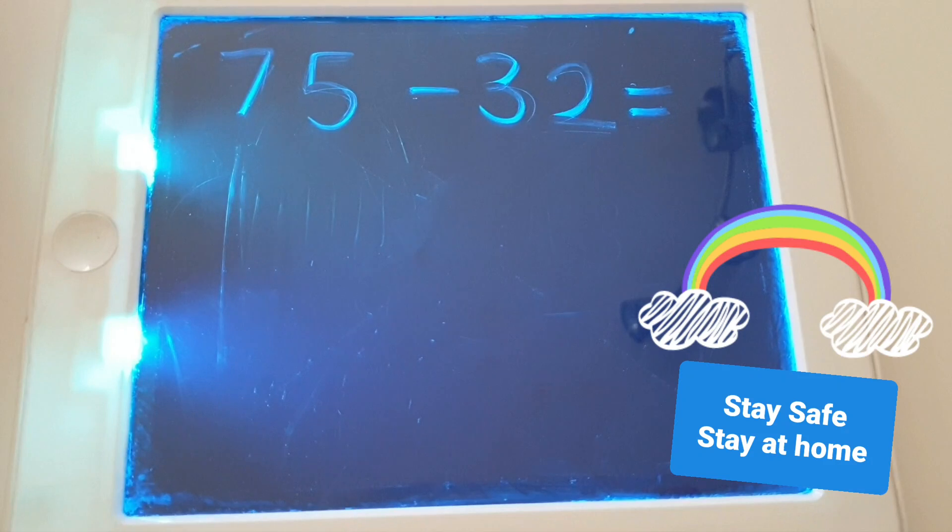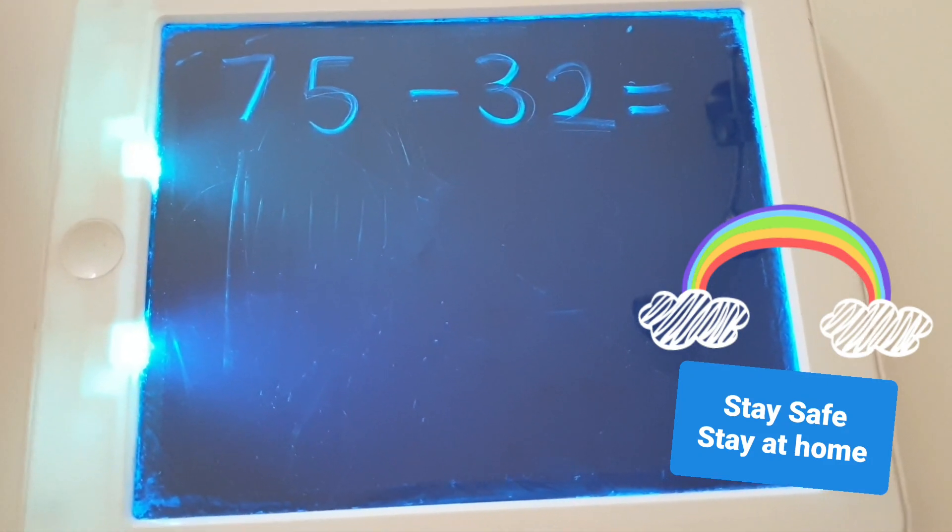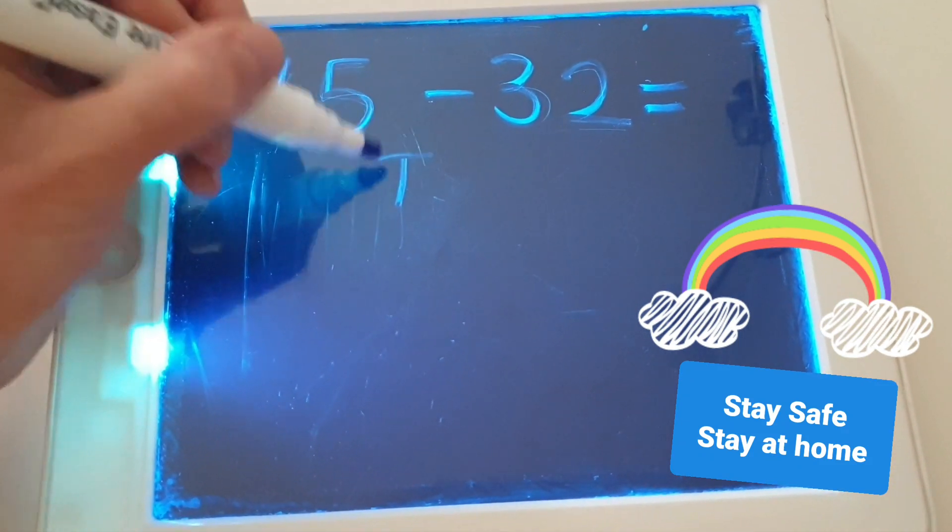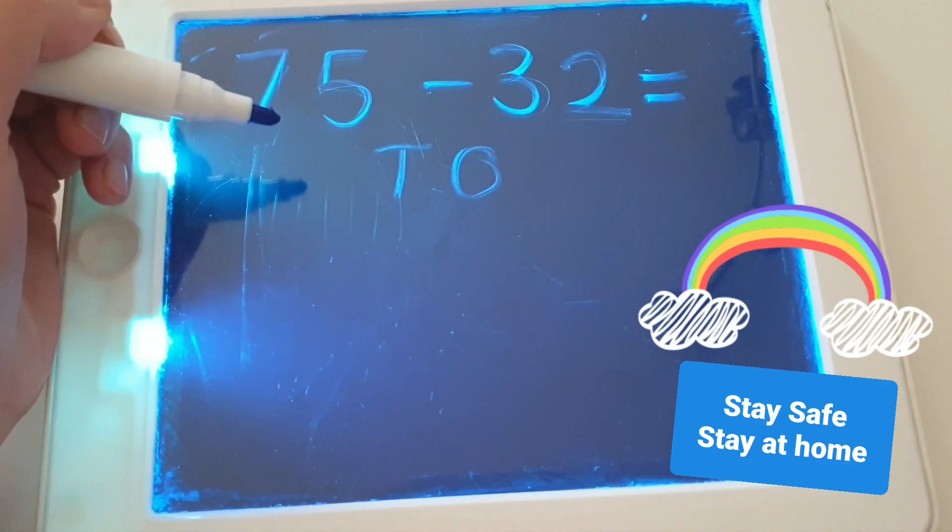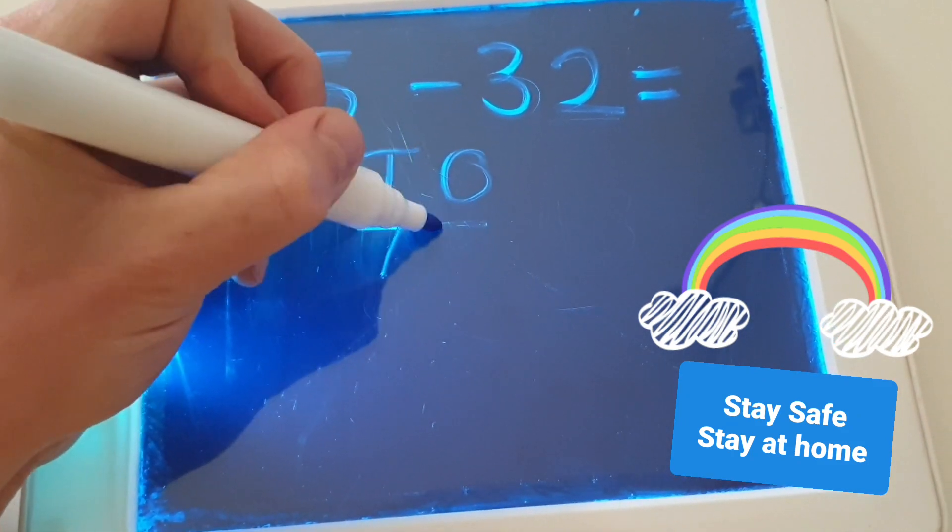I'm sure you're all doing brilliantly now, children. So if you've had a go pictorially and practically, then why not have a go using the written method? So simple steps. First of all, remind yourself of your tens and ones. Your first number is seventy, seven tens, and then five, five ones.